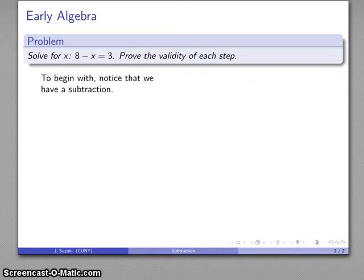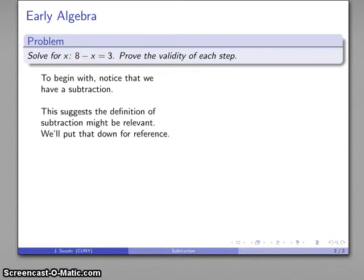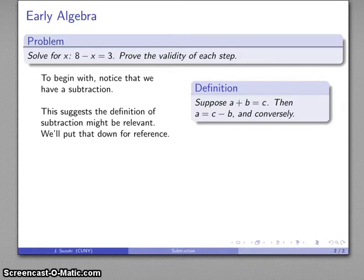Alright, so the first thing we notice here is that we have a subtraction, 8 minus x equals 3. And what do I know? Well, if I'm looking at a proof, this suggests definitions may be relevant. And in this particular case, I want to look at the definition of subtraction.